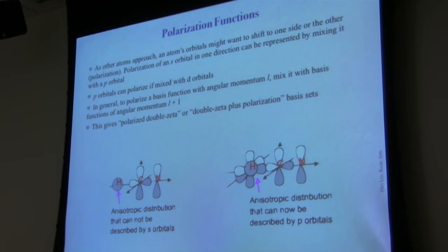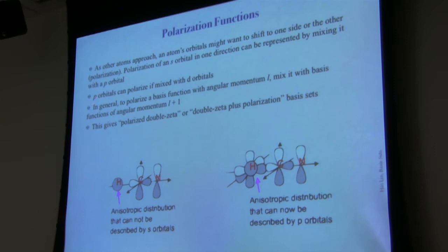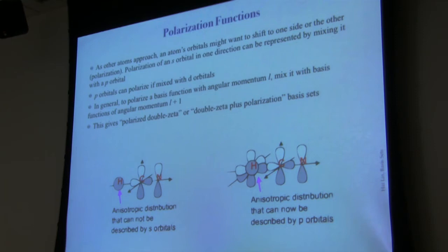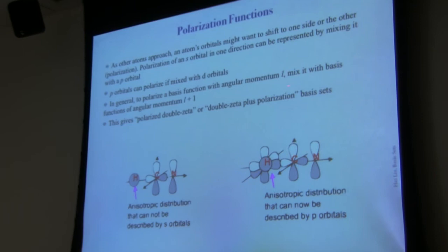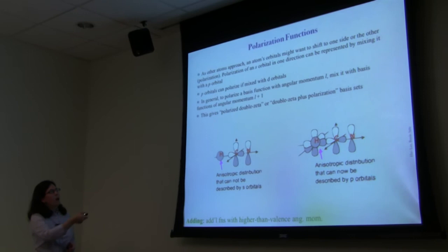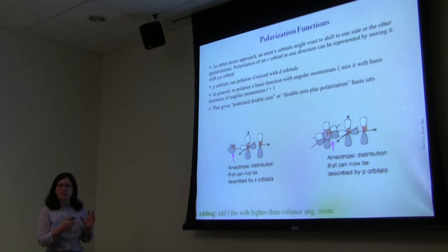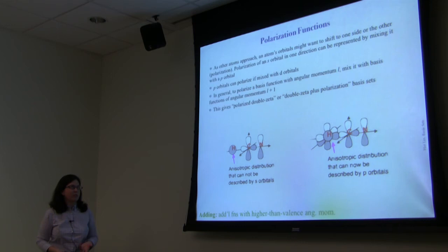The name for such functions is polarization functions. S functions can be polarized when you add p functions (as for hydrogen), and p functions can polarize when mixed with d functions for heavier atoms. For a function of angular momentum L, mixing with L+1 basis set functions gives polarization. This gives polarized double-zeta or double-zeta-plus-polarization basis sets — very important; it's not too often that you'll use a basis set without polarization functions.